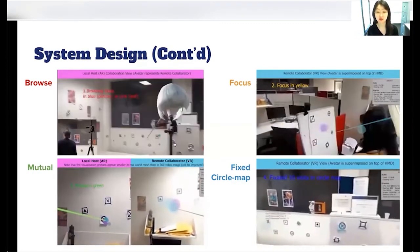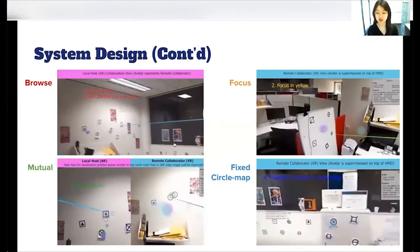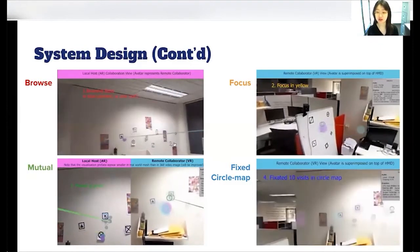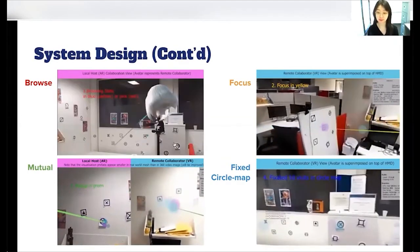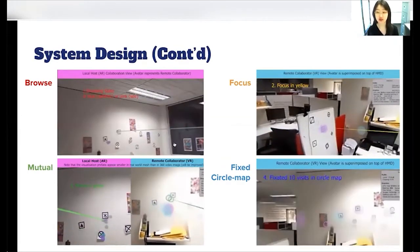Second, focus state. When the user's gaze dwells on the same point for 500 milliseconds or more, when this happens, gaze visualization turns into a yellow color.